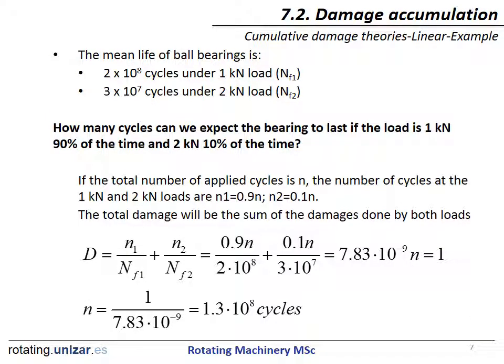Here it is applied to an example. The mean life of ball bearings is 200 million cycles under 1 kN load — this is NF1 — and 30 million cycles under 2 kN load — this is NF2. So, how many cycles can we expect the bearing to last if the load is 1 kN 90% of the time and 2 kN 10% of the time?